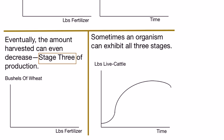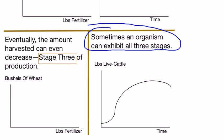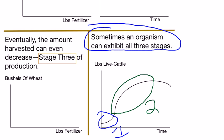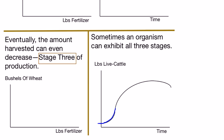In this final graph I want to show all three stages together, because for many production processes we might expect to see all three. In stage one, the input becomes more productive the more you use it. In stage two, the input is still productive — helping you produce more — but its productivity is declining. In stage three, using more of the input actually gives you less output. When all three stages exist, the production function translating an input into output has that characteristic S-shaped curve.